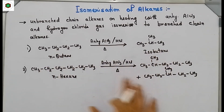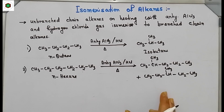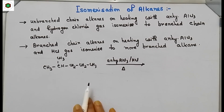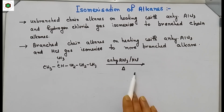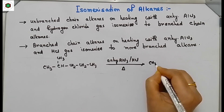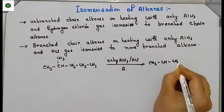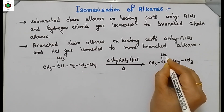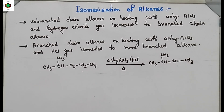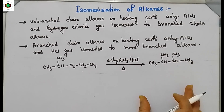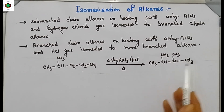These are the main products. Now, branched chain alkanes — for example 2-methylpentane — on heating with anhydrous aluminum chloride and HCl gas, isomerize to a more branched chain alkane. Here you cut short the main chain by one carbon atom, leaving four carbon atoms in the main chain. That methyl group is placed to give 2,3-dimethylbutane, which is a more branched alkane.